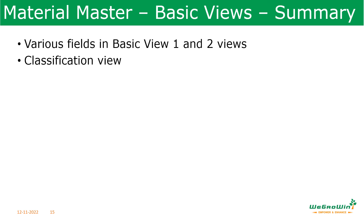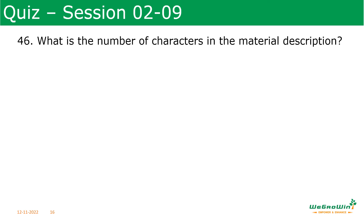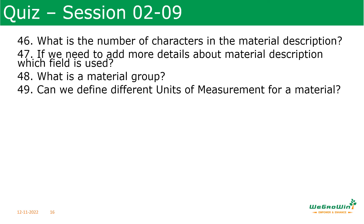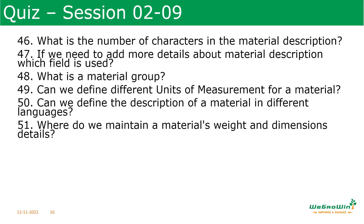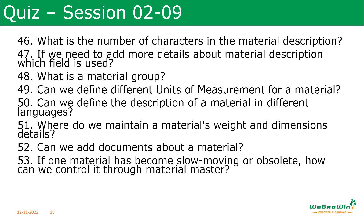In this session we discussed in detail the various fields in Basic Data 1, Basic Data 2, and the Classification view. Now it is time for quiz questions: What is the number of characters in the material description? If we need to add more details about a material description, which field is used? What is a material group? Can we define different units of measurement for a material? Can we define the description of a material in different languages? Where do we maintain a material's weight and dimensions? Can we add documents about a material? If a material has become slow-moving or obsolete, how can we control it through the material master? What is a class type?